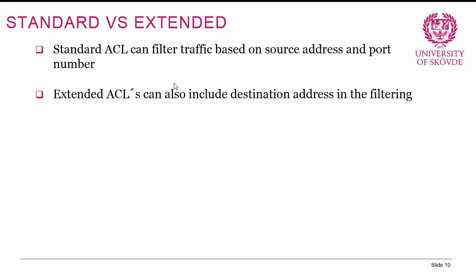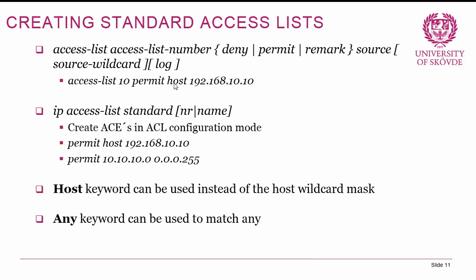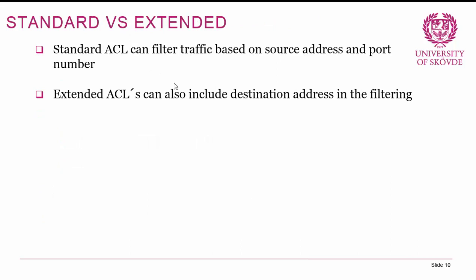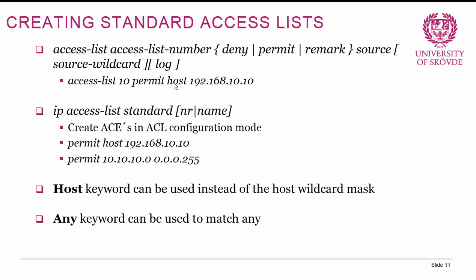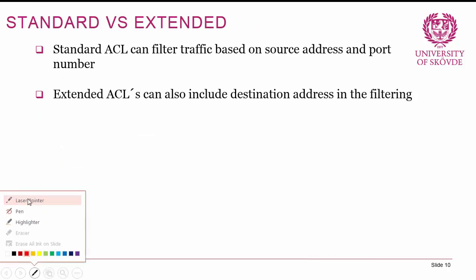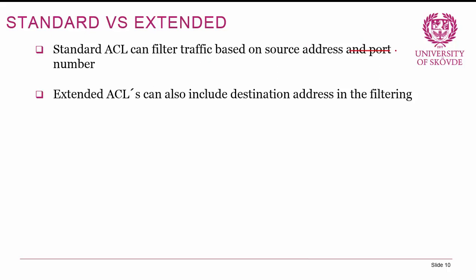ACLs on Cisco gear come in two flavors: standard and extended. Standard ACLs can only filter traffic based on source IP address — they cannot filter on port number. Extended ACLs can also include destination addresses and port numbers in the filtering. So: standard ACLs = source address only; extended ACLs = source address, destination address, and port number.